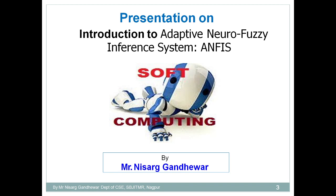ANFIS is a combination of fuzzy logic as well as neural network. In the first unit we understood that there are three main pillars of soft computing: fuzzy logic, which is used for decision making; artificial neural network, used for learning and optimization; and genetic algorithm, used for optimization of solutions. We have discussed each of these separately, and now it's time to fuse them together.